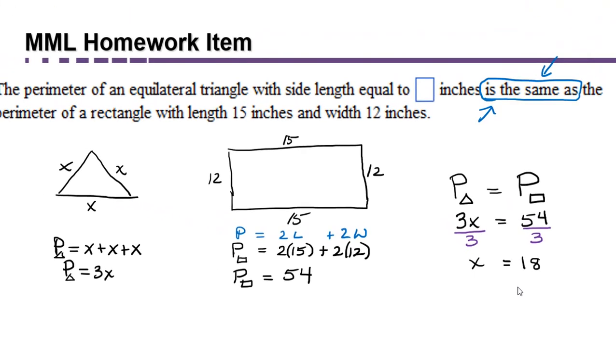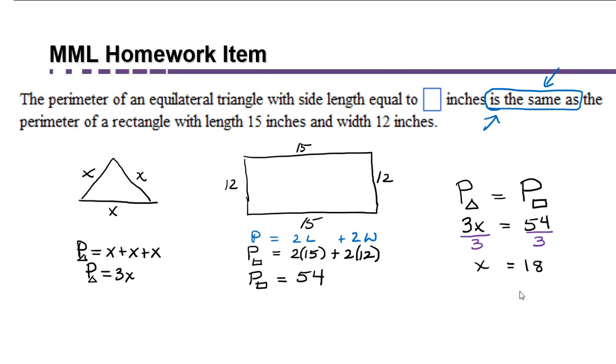Now it's important to always go back and make sure that you answer the question that was asked. We were being asked to find the side length in inches. And remember that in our diagram, x represented the length of a side of the equilateral triangle. So we've found the solution, and our units are inches, which we should include in our final answer.